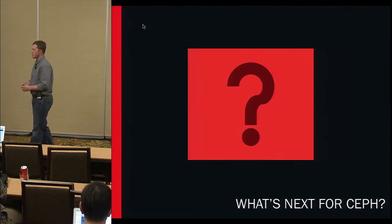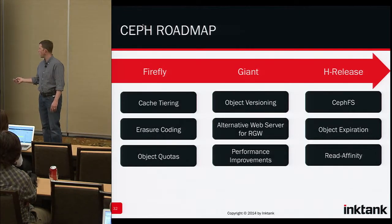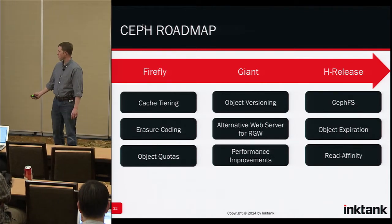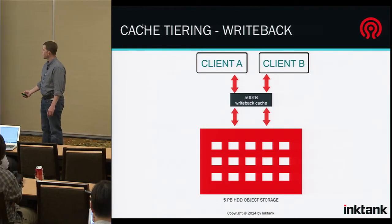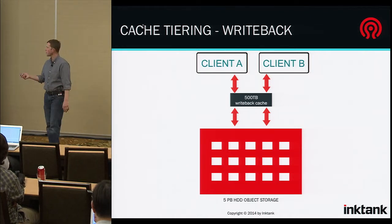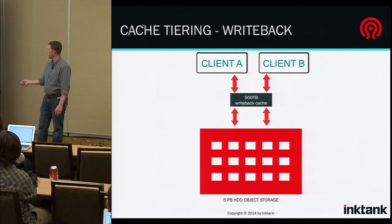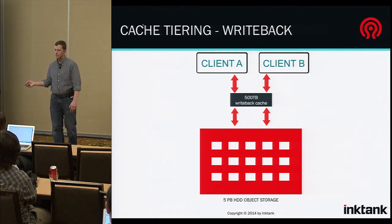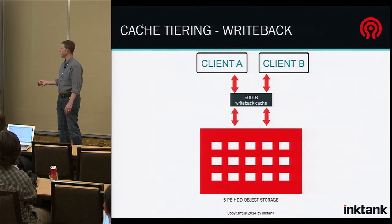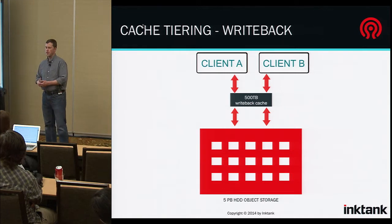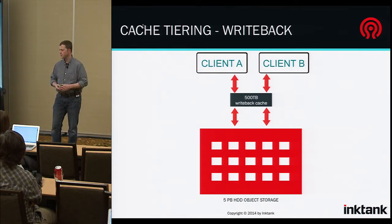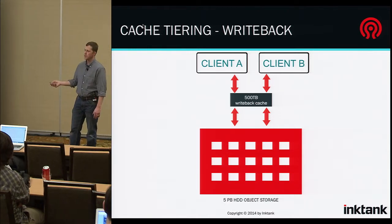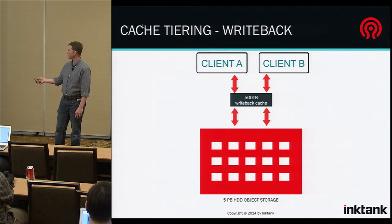I want to spend a little time talking about what's next for Ceph, and why some of these are pretty exciting. In the Firefly release, we're going to have cache tiering, erasure coding, and object quotas. The first two I think are really exciting for use cases. For cache tiering — if you've got a write-back cache — for your object storage, you can have clients where, let's say you want to have spinning disks for your entire five-petabyte cluster, but you can't afford to have five petabytes of flash. 500 terabytes could be a reasonable front end — you want to make sure that you're getting good throughput on your writes. So you're going to write to the cache, and then based upon the cache rules you set up, the cache is going to push that stuff off. Think of this as a hot-to-warm tier.